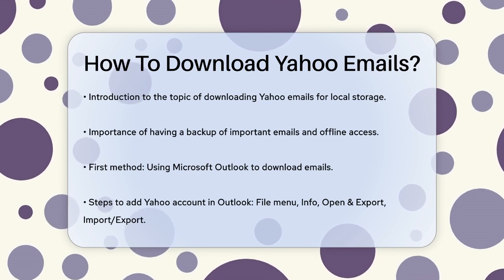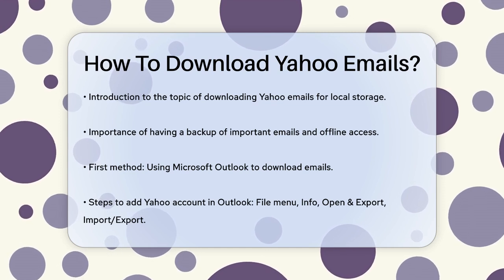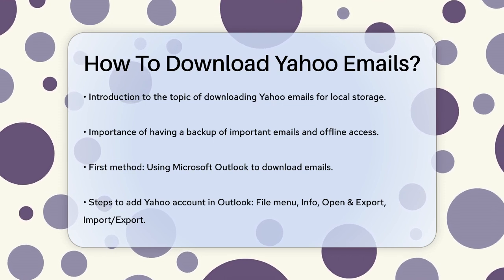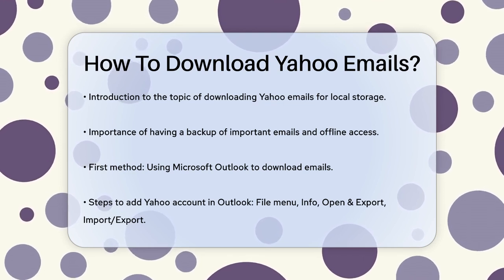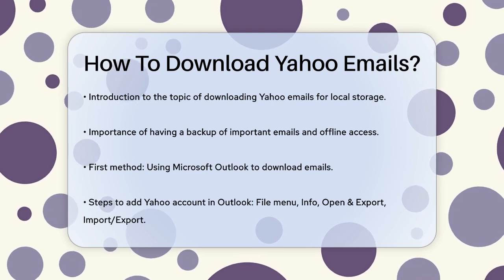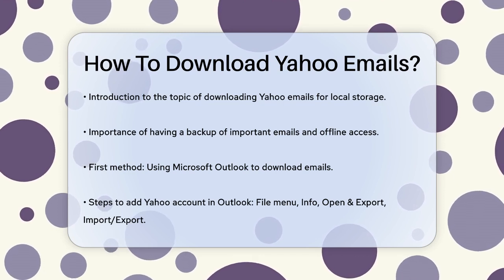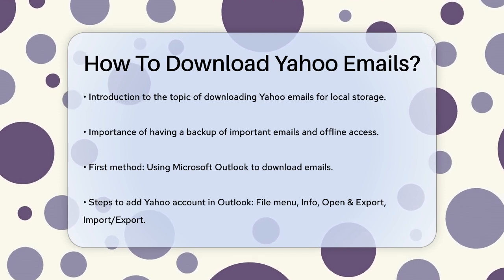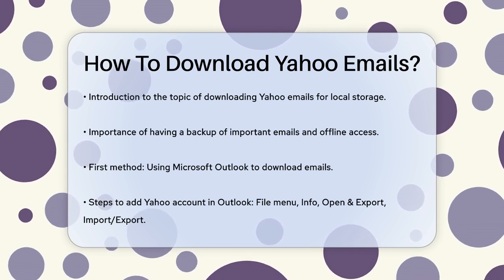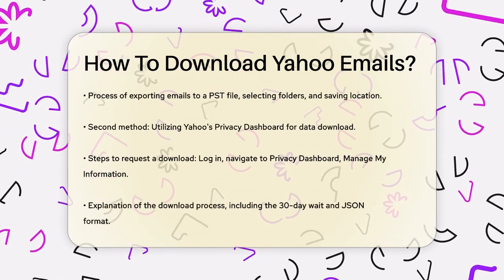First, let's talk about using Microsoft Outlook. This is a pretty straightforward way to download your Yahoo! emails. You start by opening Outlook and adding your Yahoo! email account. Go to the File menu, select Info, then Open and Export, and choose Import-Export. Here, you select Export to a file and then choose OutlookDataFile.pst to export your emails into a PST file. You can select the specific folders you want to export and choose a location on your computer to save the file. Once you're done, click Finish to start the export process.